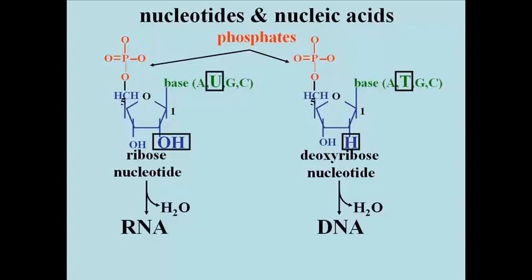Also there's a 5-carbon sugar, ribose in RNA and deoxyribose in DNA, and one or more phosphates. You're looking here at nucleotide monophosphates. Now these monomers are linked in condensation reactions to form either RNA or DNA.